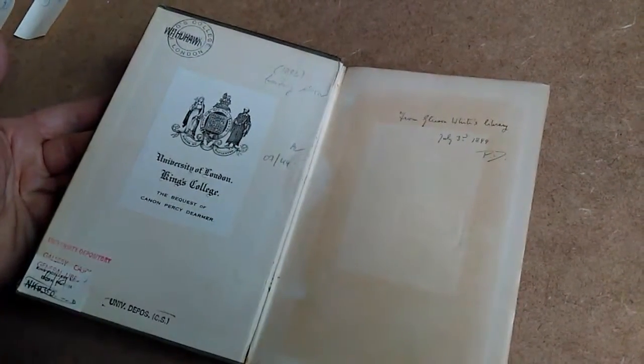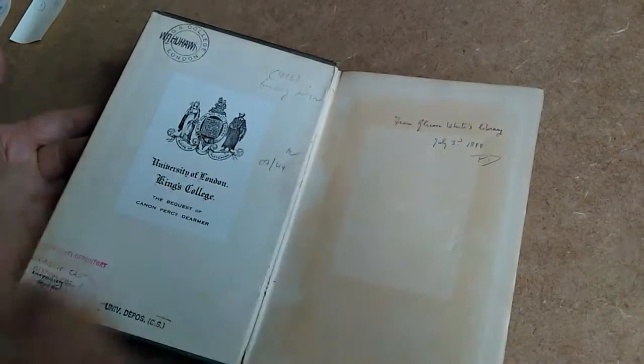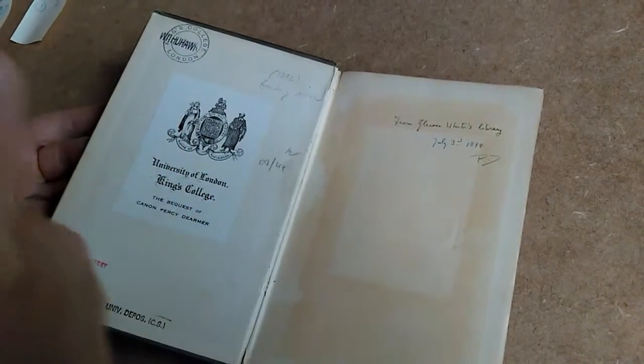And it has a very distinguished pedigree. It's from the library of Canon Percy Dierma, who was a turn of the 19th, 20th century ecclesiastic, who was involved in music, knew Vaughan Williams, a hymn writer.